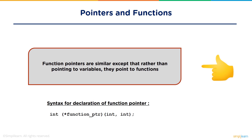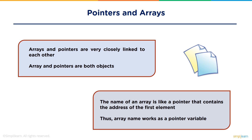Like a normal variable has an address, similarly every function has an address, and we can easily access the function using its reference or address. Function pointers are similar to normal pointers. When pointers are passed to a function, the address of the actual argument in the calling function is copied into the formal arguments of the called function. In the declaration syntax, int is the return type, and parentheses around the function pointer tell the compiler it is a pointer to a function, followed by the argument list.